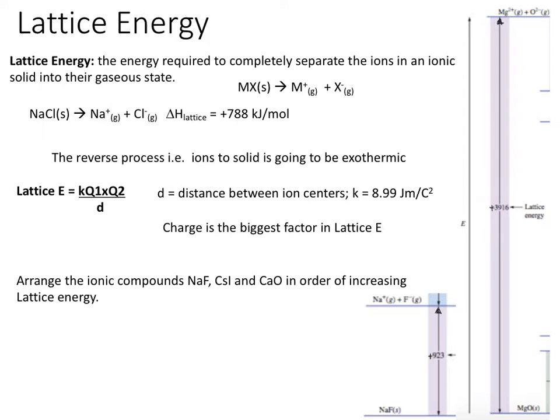Lattice energy is the energy that's required to completely separate ions that are possessed by an ionic compound into their gaseous ionic state. So in order to get this process to happen, we must add quite a bit of energy, as we see here. And the energy that we have to add to separate these ions is known as lattice energy.